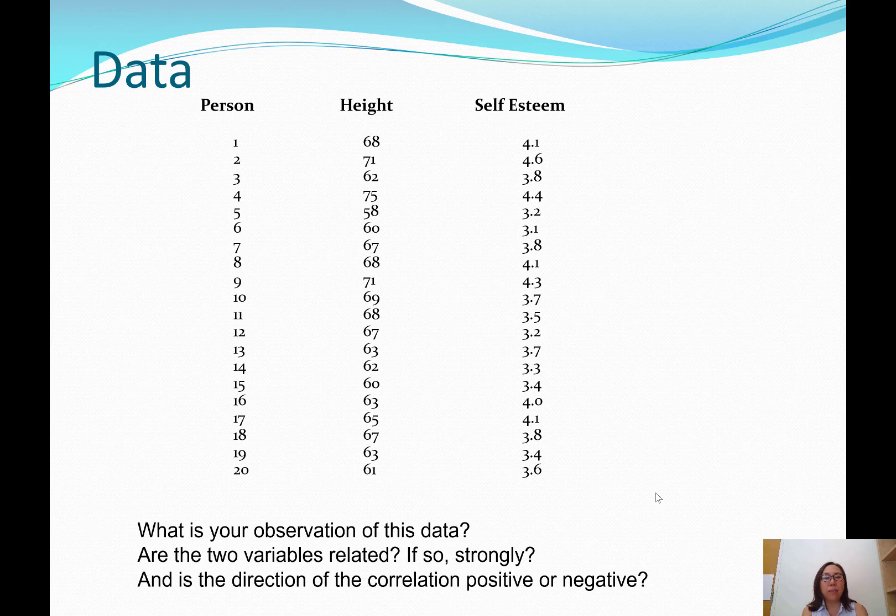We may see, let's pick a high number in height. There's 71 and associated with a fairly high self-esteem, 4.6. And there's 75, even a taller person, with high self-esteem. When you look at a very low number, here 61, that seems to be associated with a lower self-esteem. You may actually see some exceptions as well. For example, 63, but the self-esteem is 4.0. So there seems to be some exceptions there, but it seems to be generally true that taller people tend to have higher self-esteem.